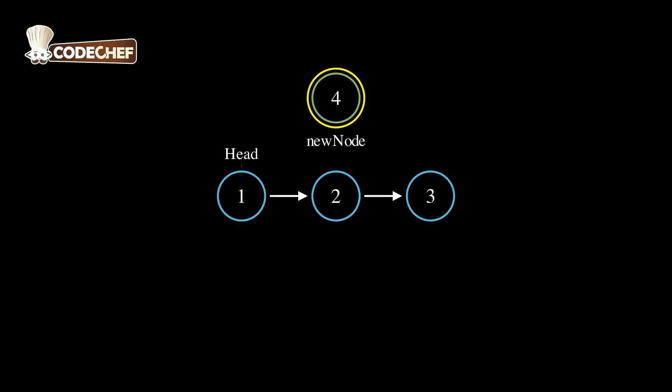Now, we want to insert a new node with the value 4 at the beginning of the list. First, we create a new node and assign it the value 4.